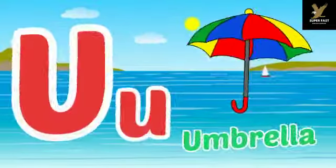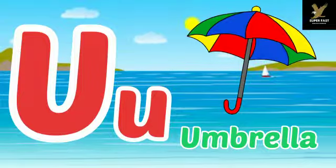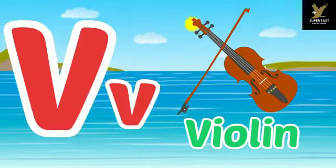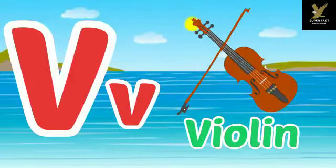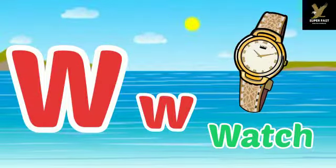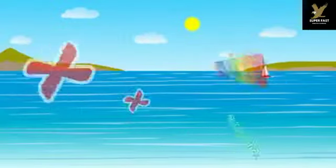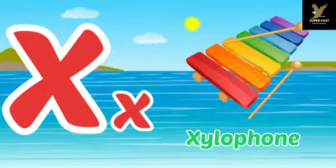U is for Umbrella, U-U-Umbrella. V is for Violin, V-V-Violin. W is for Watch, W-W-Watch. X is for Xylophone, X-X-Xylophone.